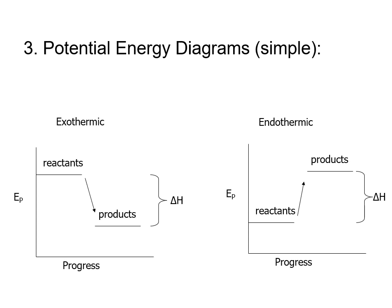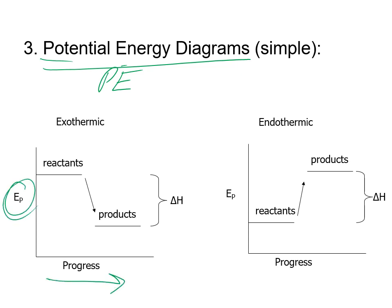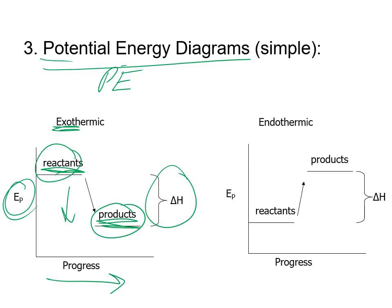You could also state the change in energy as a potential energy diagram — a PE diagram — where you draw potential energy on the y-axis and the progress of the reaction on the x-axis. Your delta H is represented visually by this graphic. If it's an exothermic reaction, the energy of the system goes from higher to lower. If it is endothermic, it takes in energy and we end up with a positive delta H; exothermic gives a negative delta H.